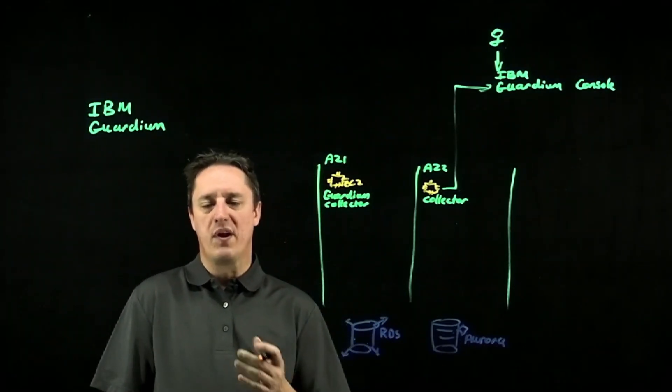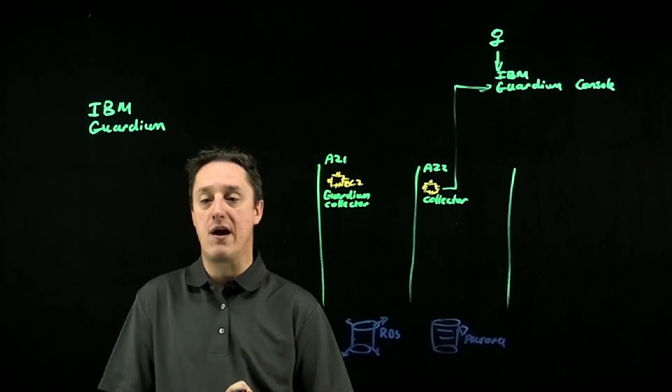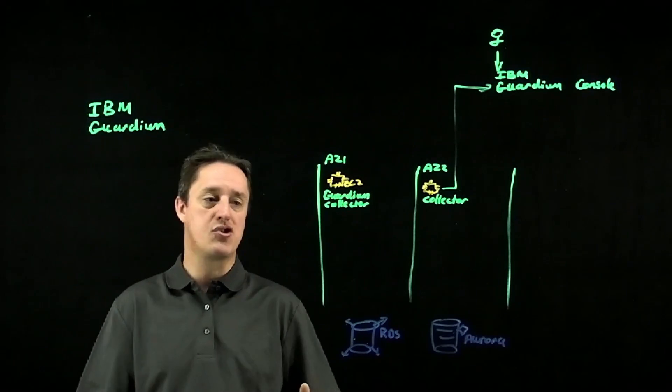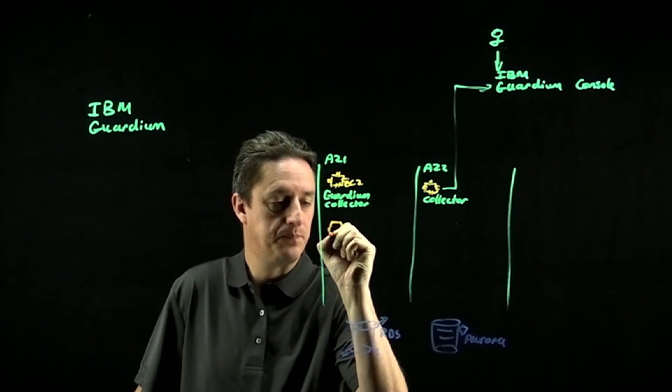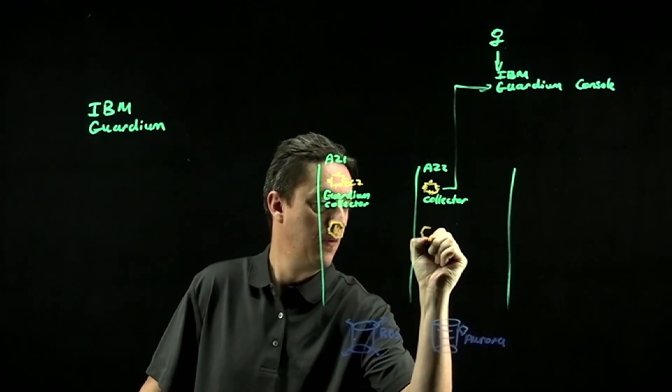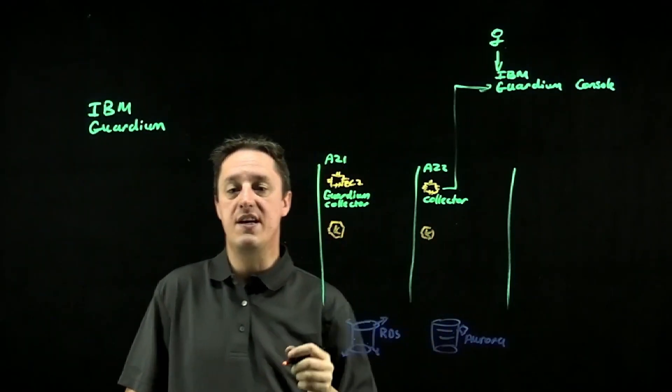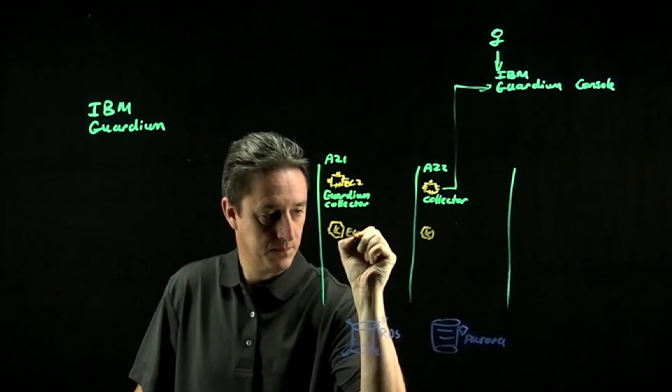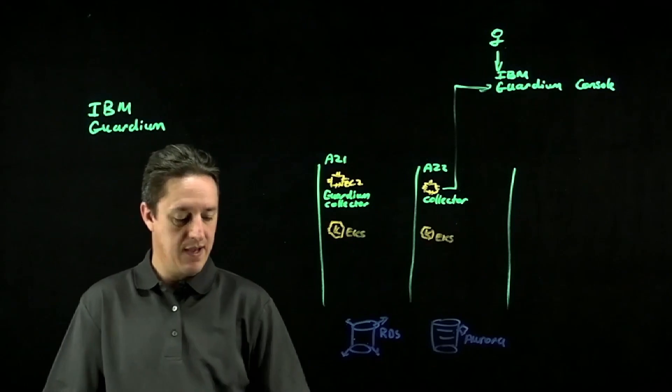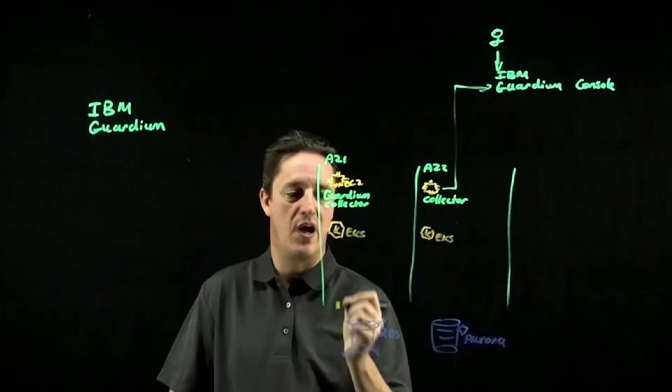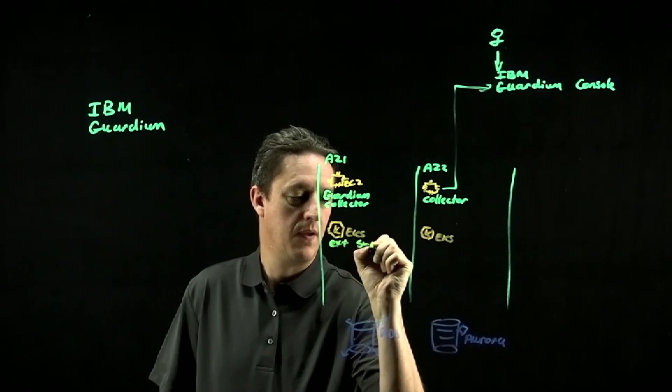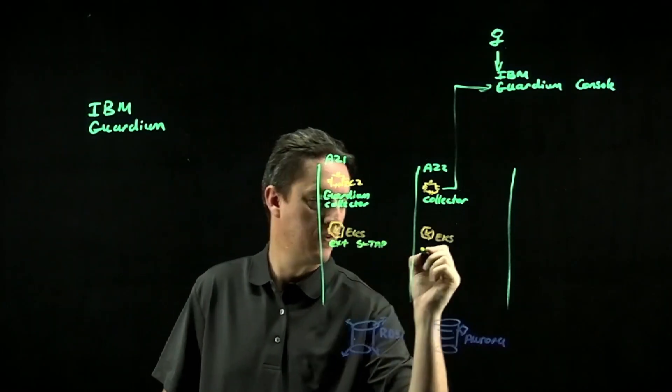In order to do this, what we're going to do is take advantage of a very lightweight containerized version of the STAP agent. So we will deploy that onto EKS. And on my EKS environment, I'm going to run an external STAP agent.